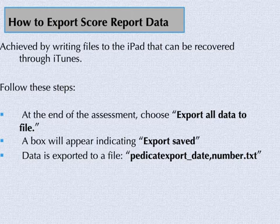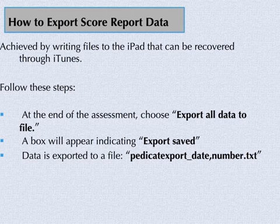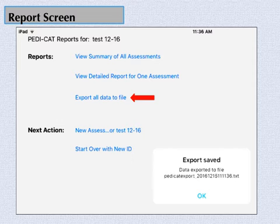At the end of an assessment, choose Export All Data to File. A box will appear indicating Export Saved. Data is exported to a file called PDCATExport underscore date comma number dot txt. This is what will appear on the screen when you select Export Data to File.